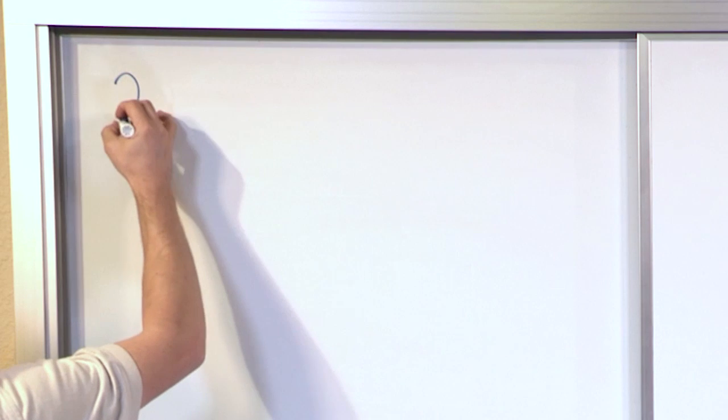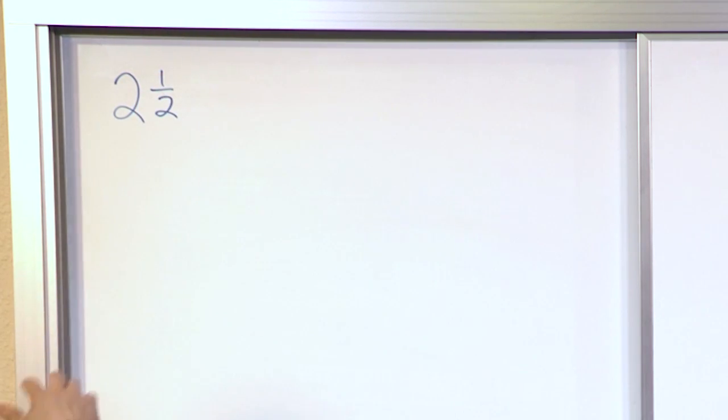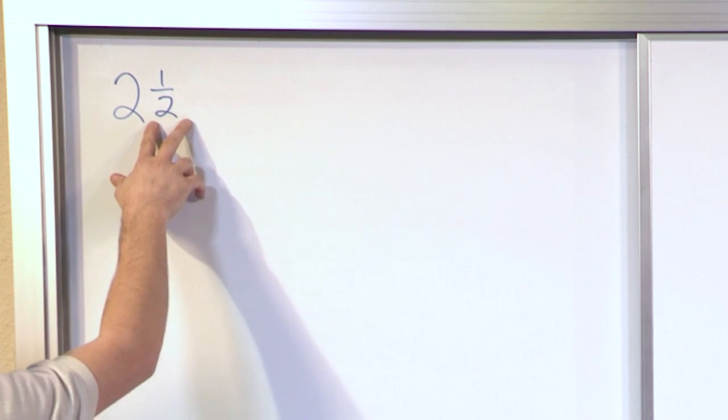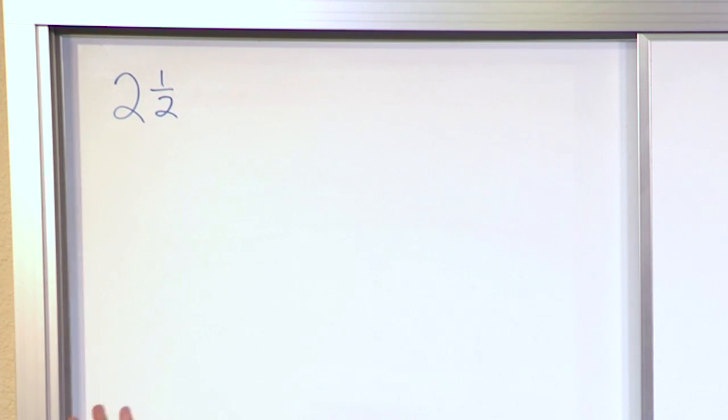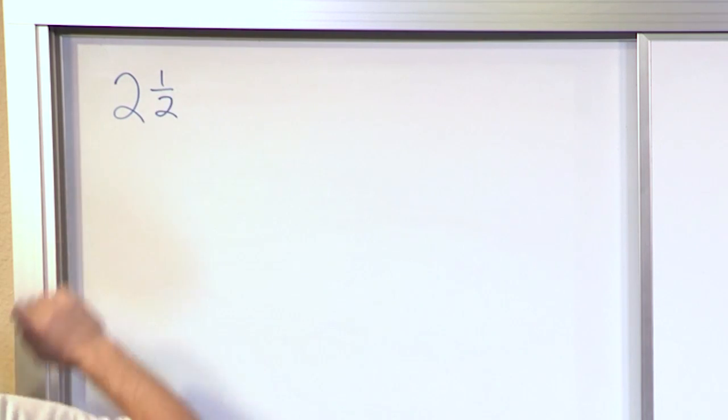Sometimes you will see a fraction that looks something like this, as an example: two and one half. The way you write this is you have the big number out in front and then you have the fraction sitting next to it. And the way you say it literally in words is two and a half.